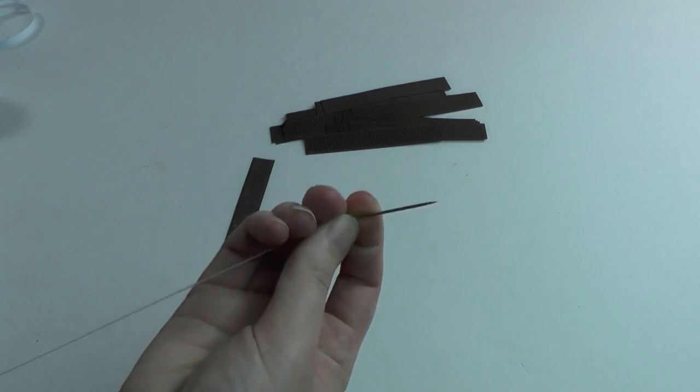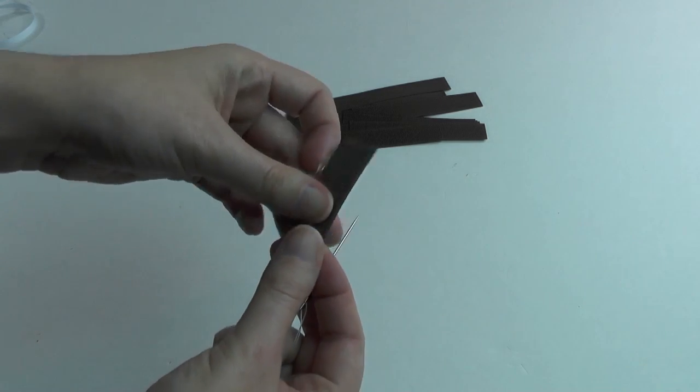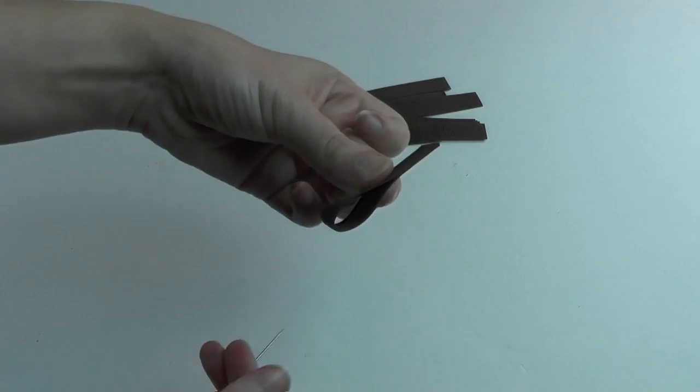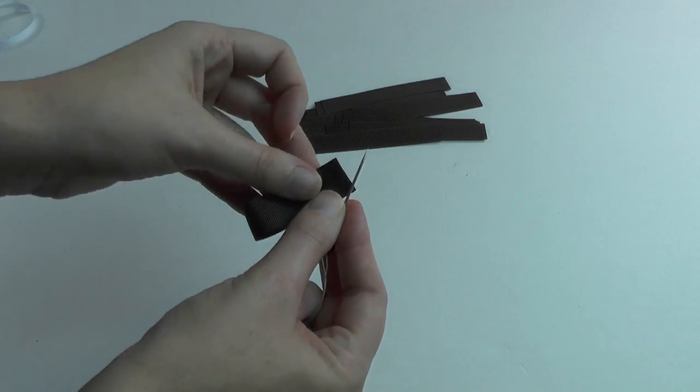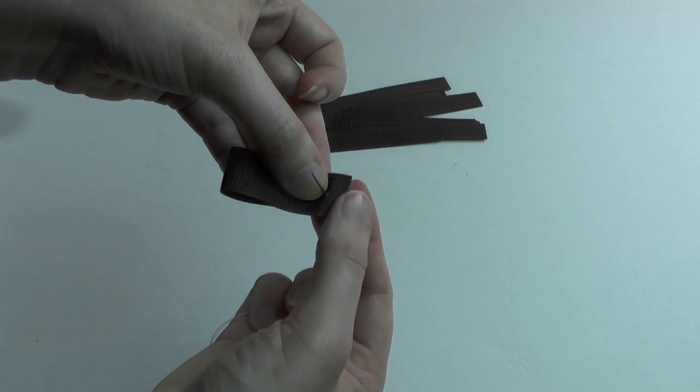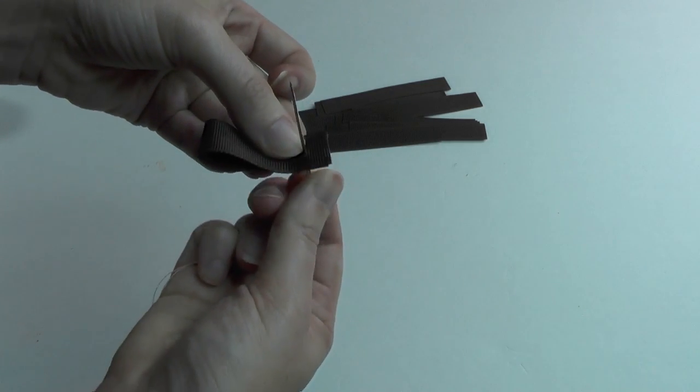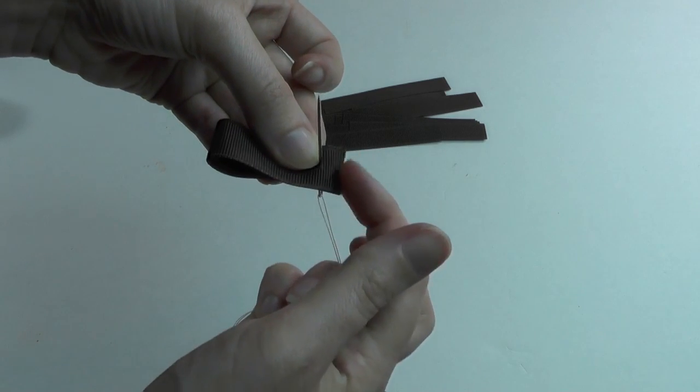Just like in the pumpkin puff tutorial, we are going to be threading our strips once we fold them, fold them in half like this, and then we're just going to thread them on the needle. I'm going to give about a quarter of an inch, you want that at the top.